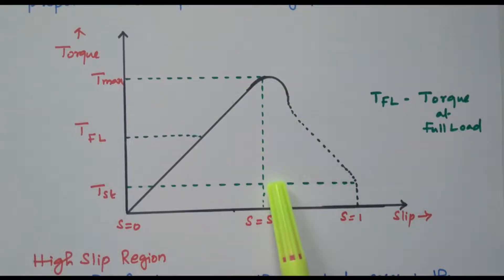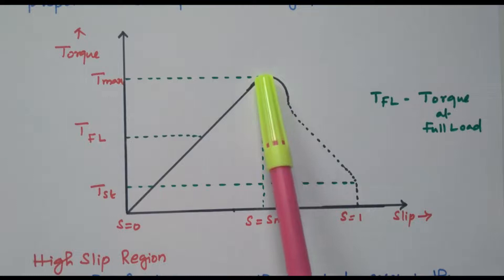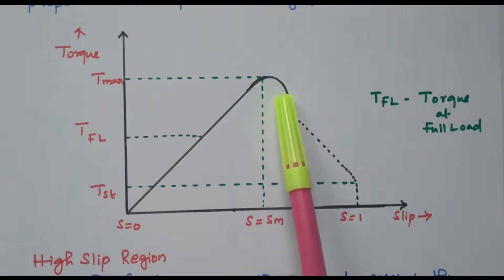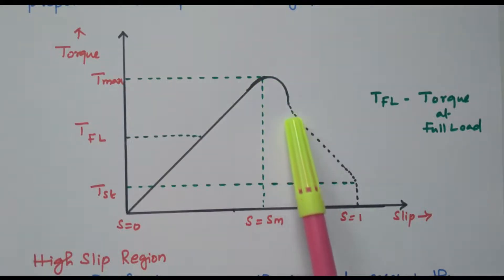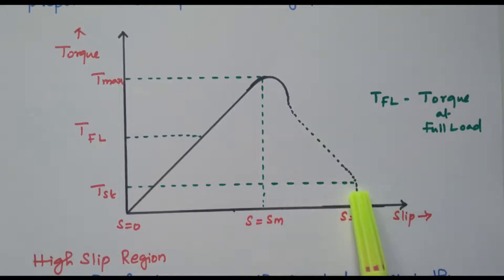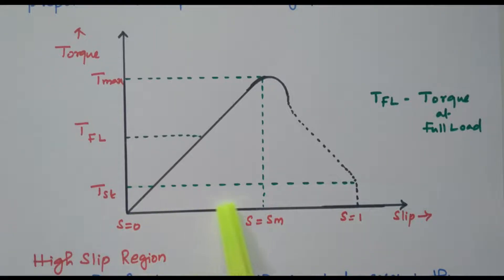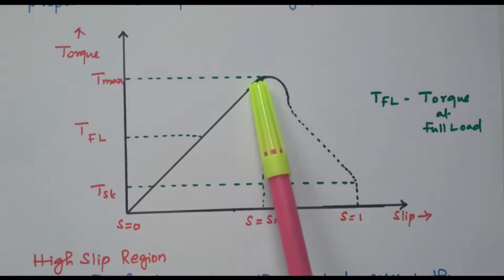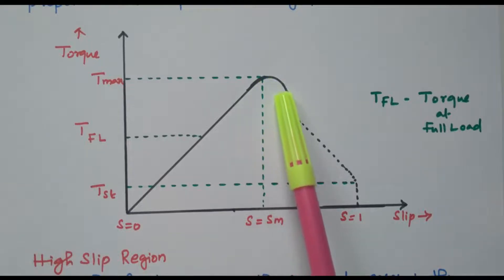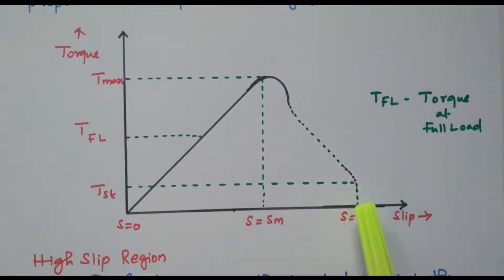After this maximum point comes the high slip region, where torque decreases in a hyperbolic manner, continuing to decrease. This is the starting torque — T_start — and it reaches 0 at S equal to 1. So before the maximum torque, during the low slip region, torque keeps increasing and reaches the maximum value; after the maximum value, it keeps decreasing and reaches 0.